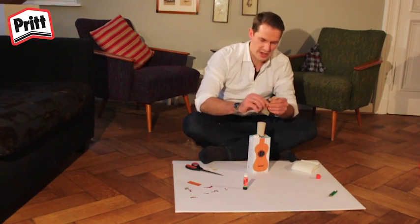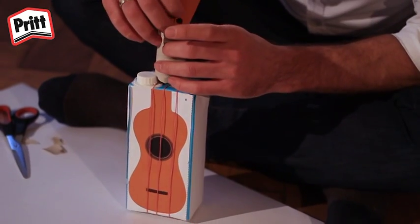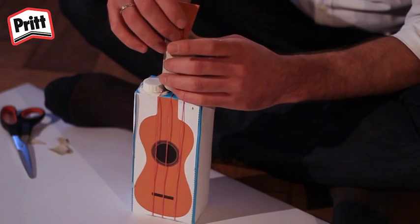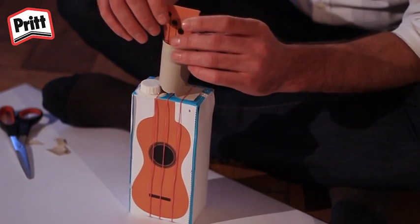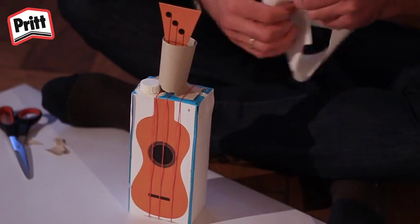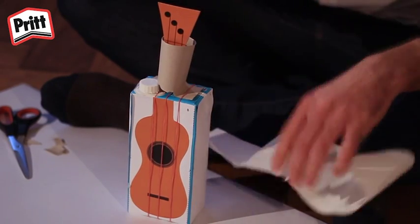We kunnen nu de kop van de ukelele in de toiletrol zetten. Neem wat toiletpapier en rol het op. In de achterkant lijmen.